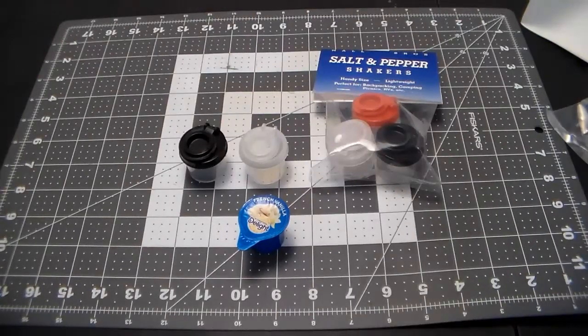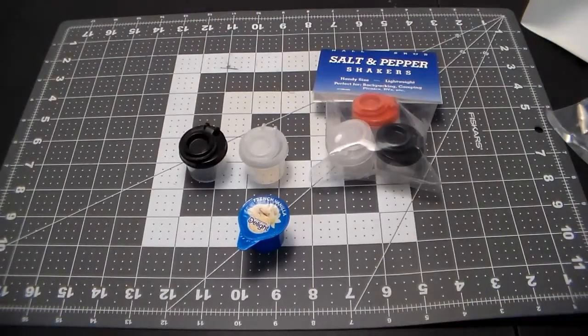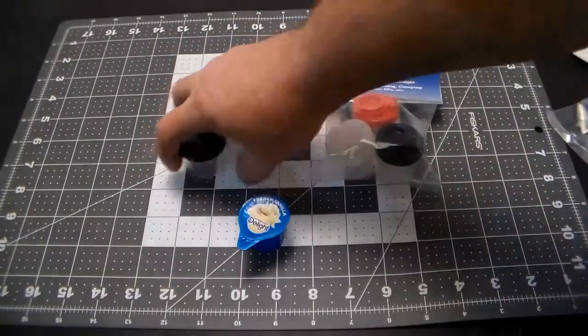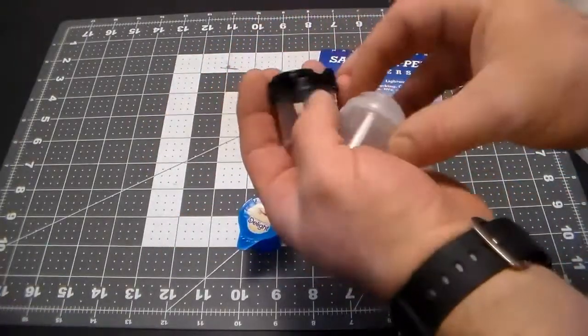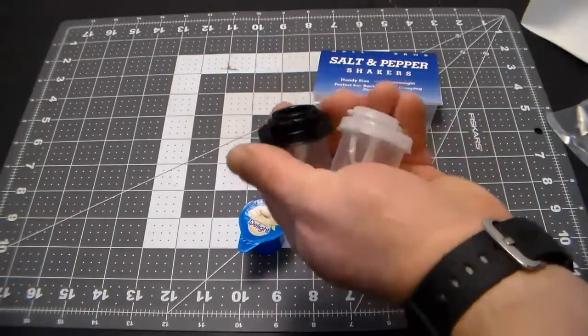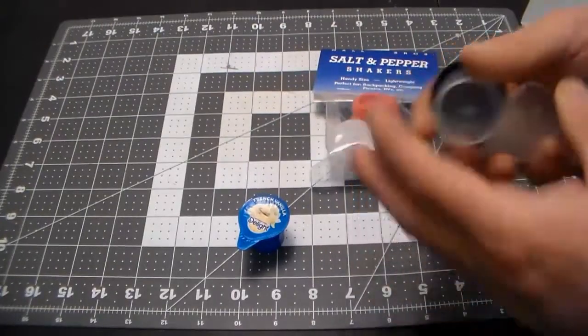For me usually all I carry is salt and pepper, that's it. I don't carry anything else unless it's a special dish that requires it, and then I would carry that separately in something. I think these would just be ideal for my revised mess kit.